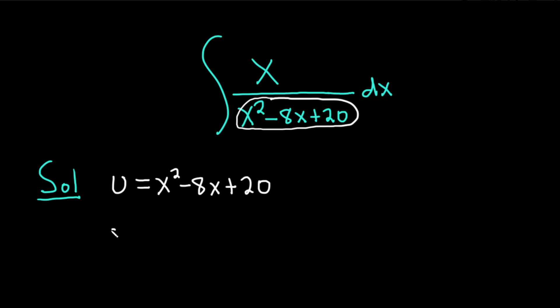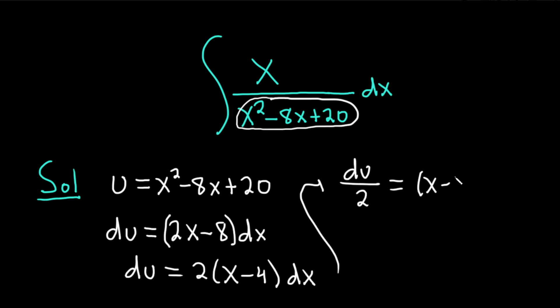Now we can take the derivative of both sides and compute du. This derivative here is just a power rule, so we're going to get 2x, and the derivative of minus 8x is just minus 8. The derivative of 20 is 0, so we have du equals 2 times x minus 8 dx. We can pull out a 2 here. So du equals 2 parenthesis x minus 4 dx. Let's go ahead and divide by 2. When we do that, we get du over 2 equals x minus 4 dx.